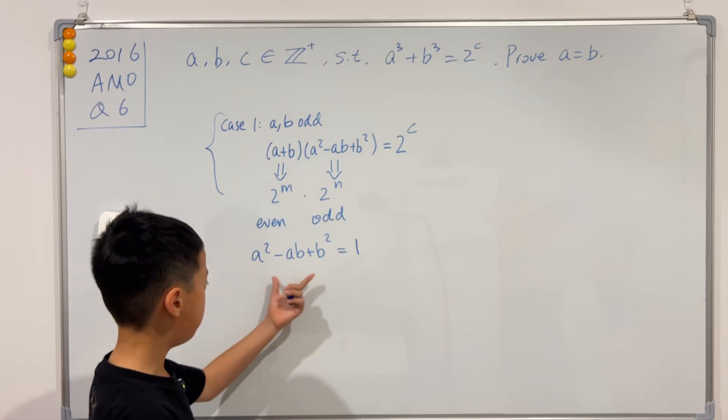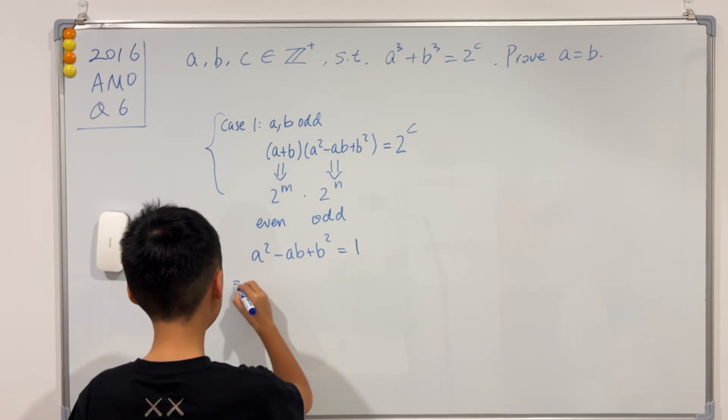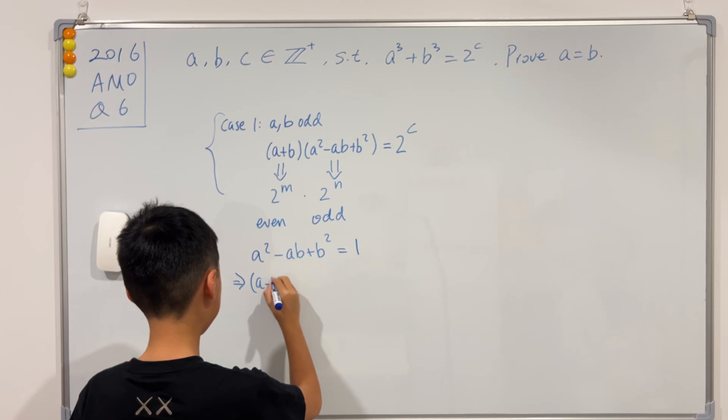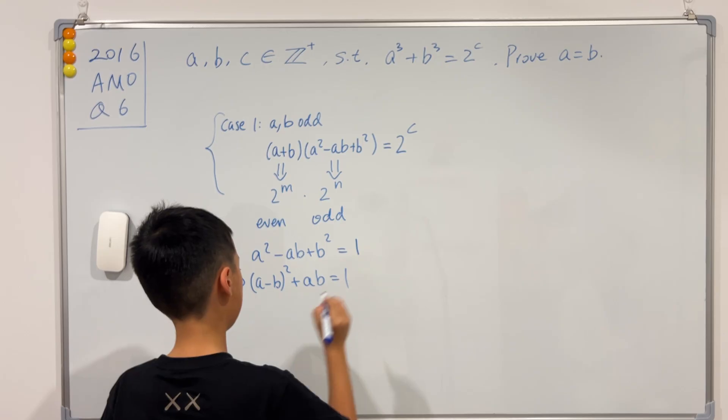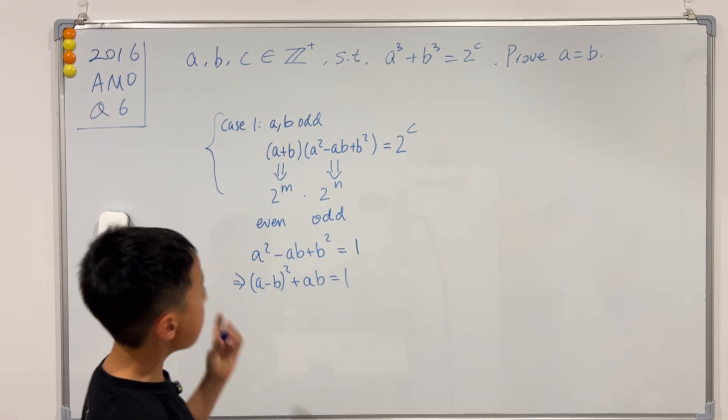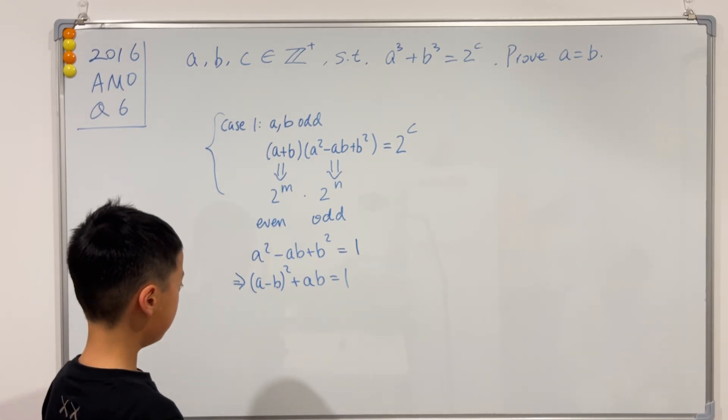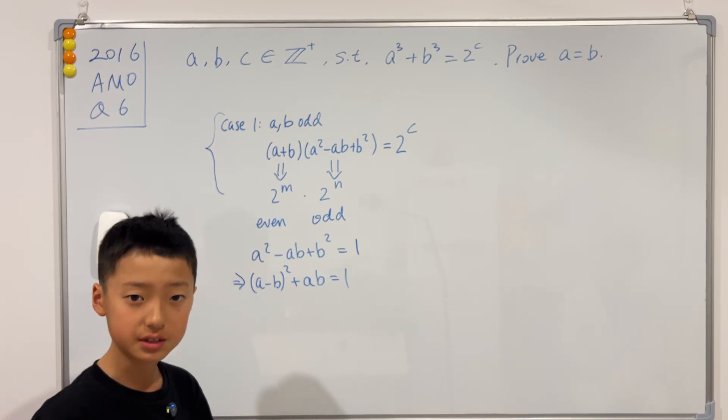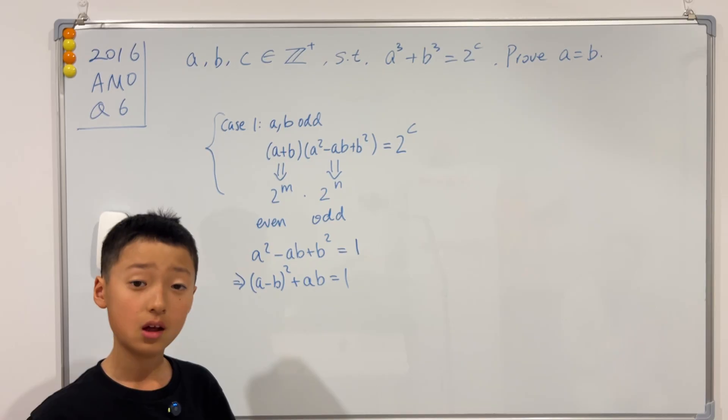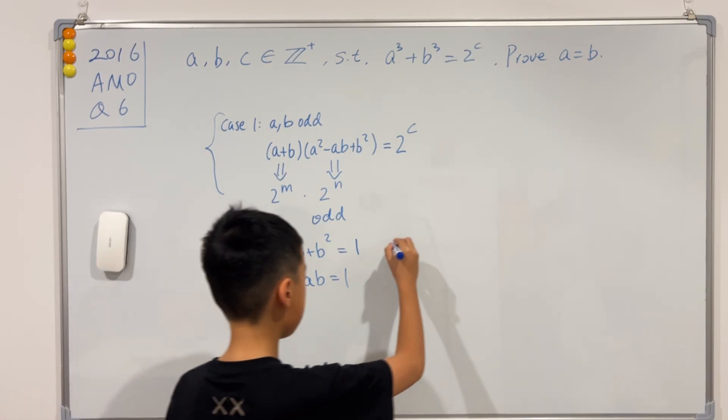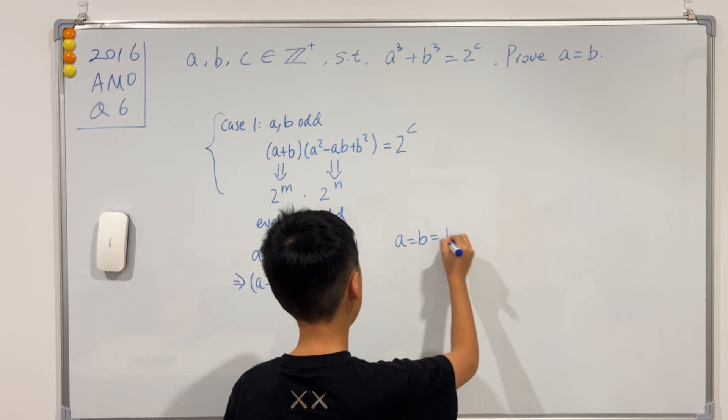Now, if I just complete the square on the left hand side, then we'll notice it's just equal to a minus b squared plus ab equals 1. Now, since a and b are both positive integers, then these have to be non-negative.